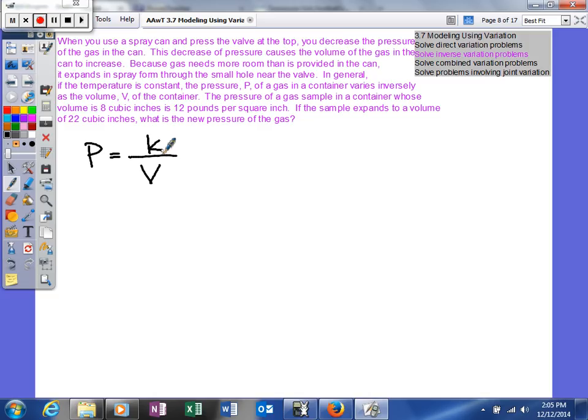Now what we're going to do is we're going to plug in these values to try to figure out what k is. So we need a specific moment where we know the pressure and the volume. It says the pressure of a gas sample and container whose volume is 8 cubic inches is 12 pounds per square inch.